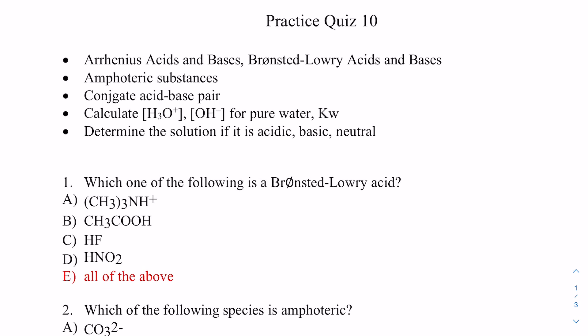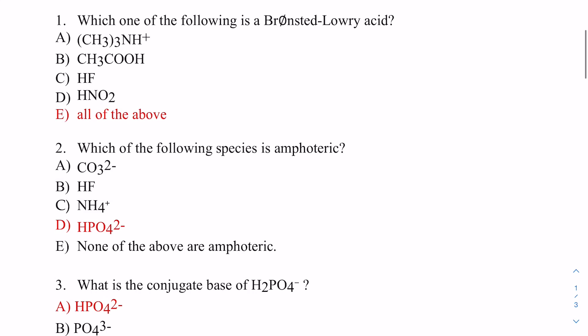Hello everyone. Today I'm going to explain several topics from quiz 10, which is the beginning of chapter 14. Let's start from the first topic. You need to be able to differentiate — if I give you a chemical formula — whether it's a Brønsted-Lowry acid or base. The definition for a Brønsted-Lowry acid is any material that has a proton, or has an H, and could be a proton donor.